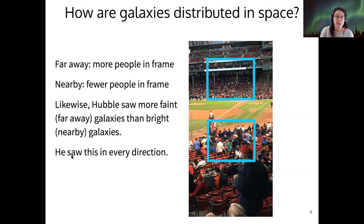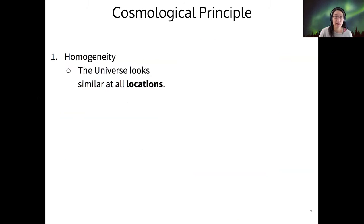So this leads to an important set of assumptions that we make about how galaxies are distributed in space. The two principles are called homogeneity and isotropy, and they form what we call the cosmological principle.